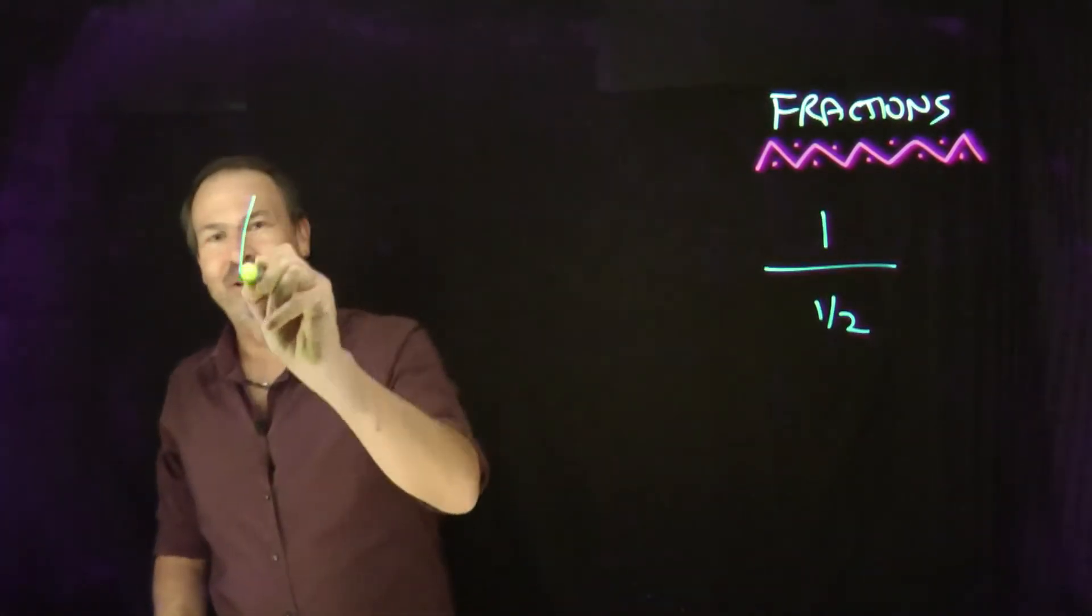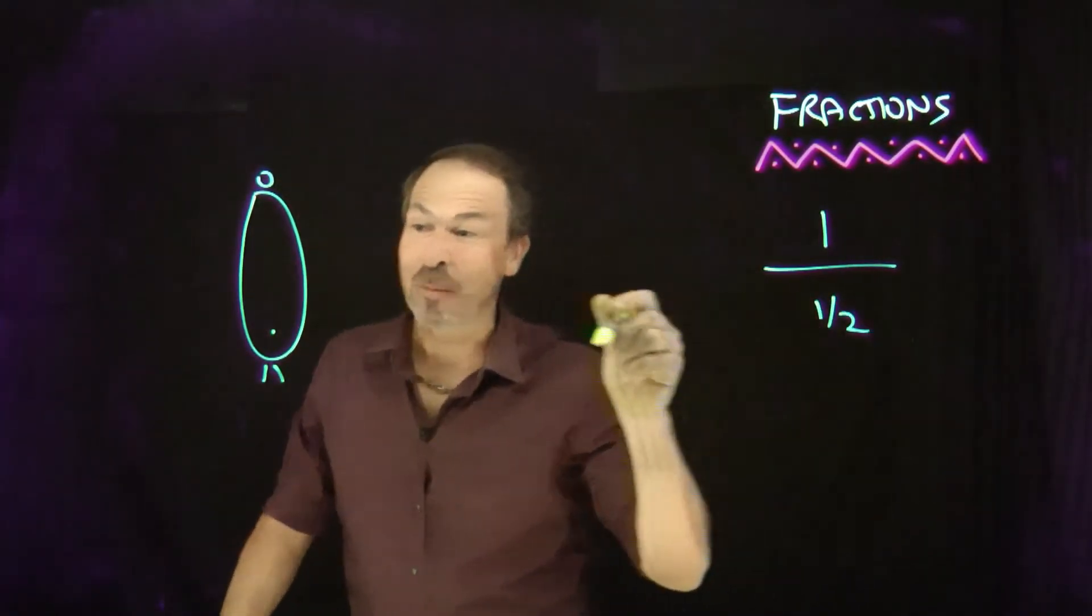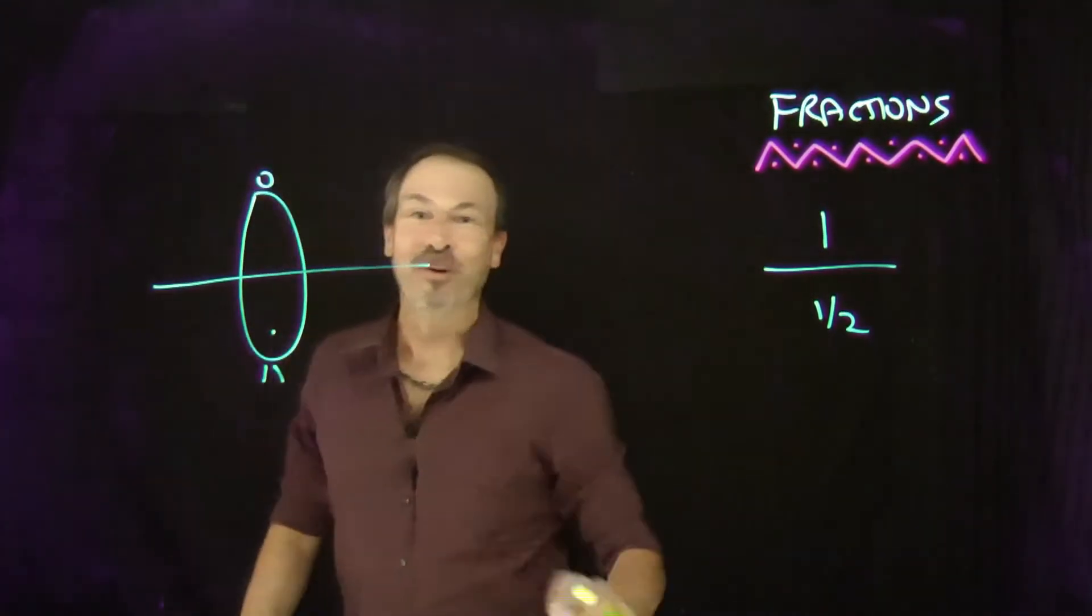Well, actually, if I draw a student, here's a student. I guess I've got one pie for half a student, which means I need to chop the student in half. Oh dear, poor student.